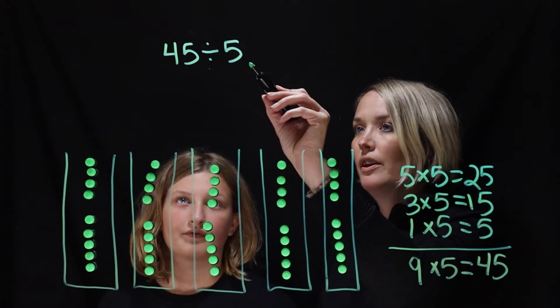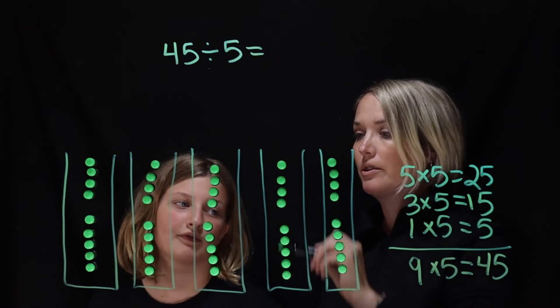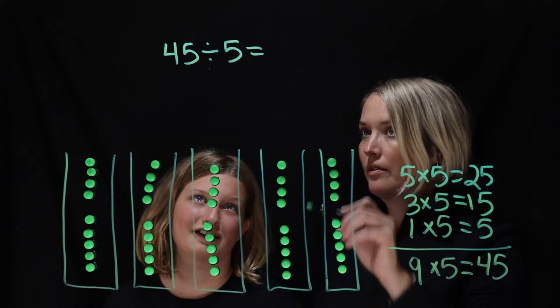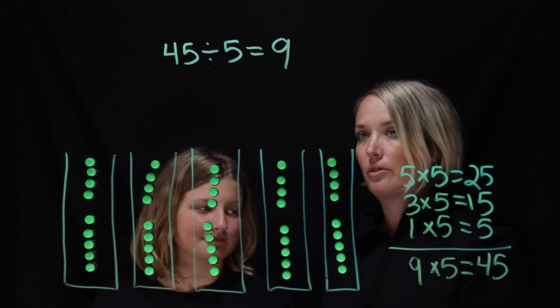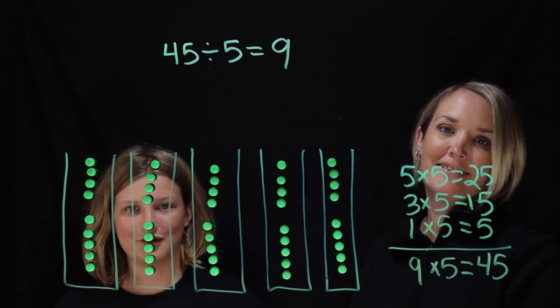Alright. So 45 into 5 equal groups equals? Equals 9. Perfecto. Great job, Anna. Thanks. That was really cool.